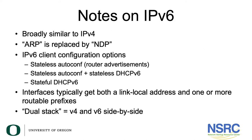In summary, IPv6 is broadly similar to IPv4 — the concepts are the same and it's still binary, just represented in hexadecimal for ease. ARP is replaced by NDP, and you have various IPv6 client configuration options: stateless auto-configuration using router advertisements, stateless auto-configuration plus stateless DHCPv6, or stateful DHCPv6. Interfaces typically get both a link-local address and one or more routable prefixes, and when using IPv6 you typically run a dual stack with both IPv4 and IPv6 side by side.